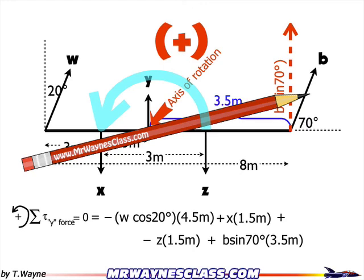So now I've got my math sentence. Zero is equal to negative w cosine 20 degrees times 4.5 meters plus x times 1.5 meters plus negative z times 1.5 meters plus b sine 70 times 3.5 meters. Now remember, those letters, they're just forces.